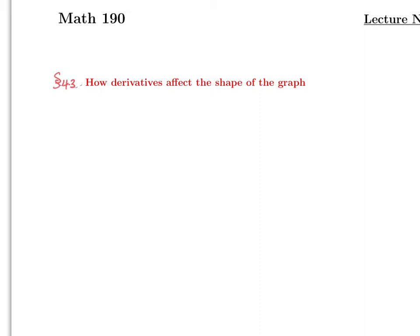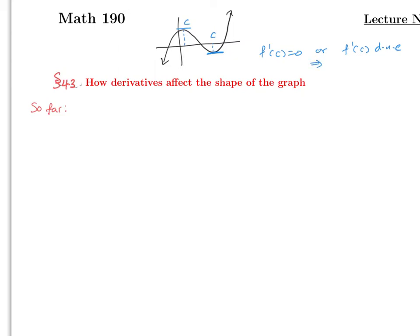This video covers section 4.3: how derivatives affect the shape of the graph. We've technically done this already, so now we're making it official. From sections 4.1 and 4.2, we know that critical points occur where the derivative equals zero — f'(c) = 0 — or where f'(c) does not exist.